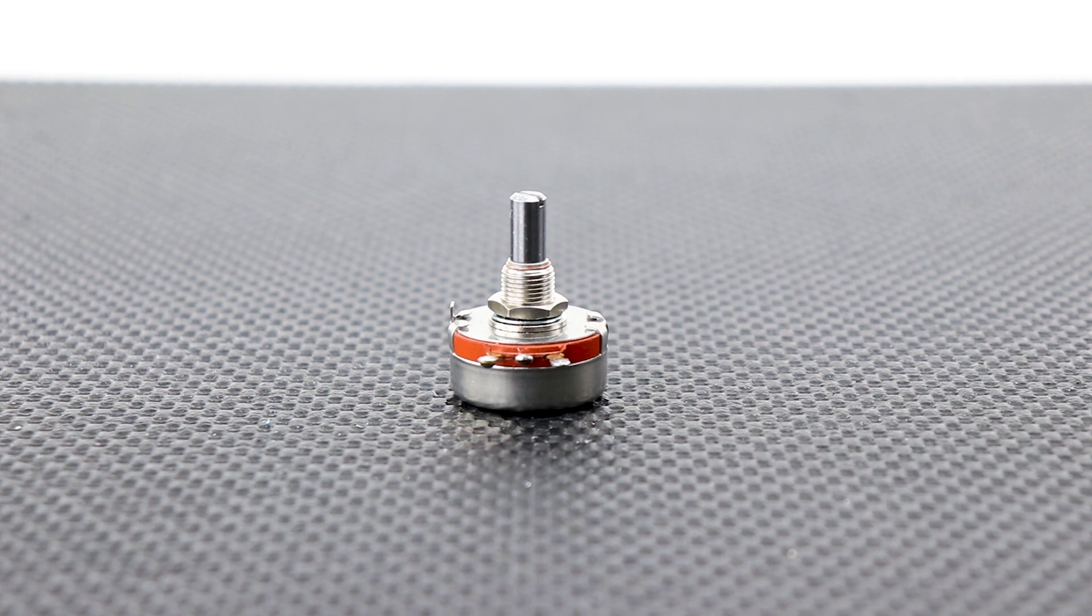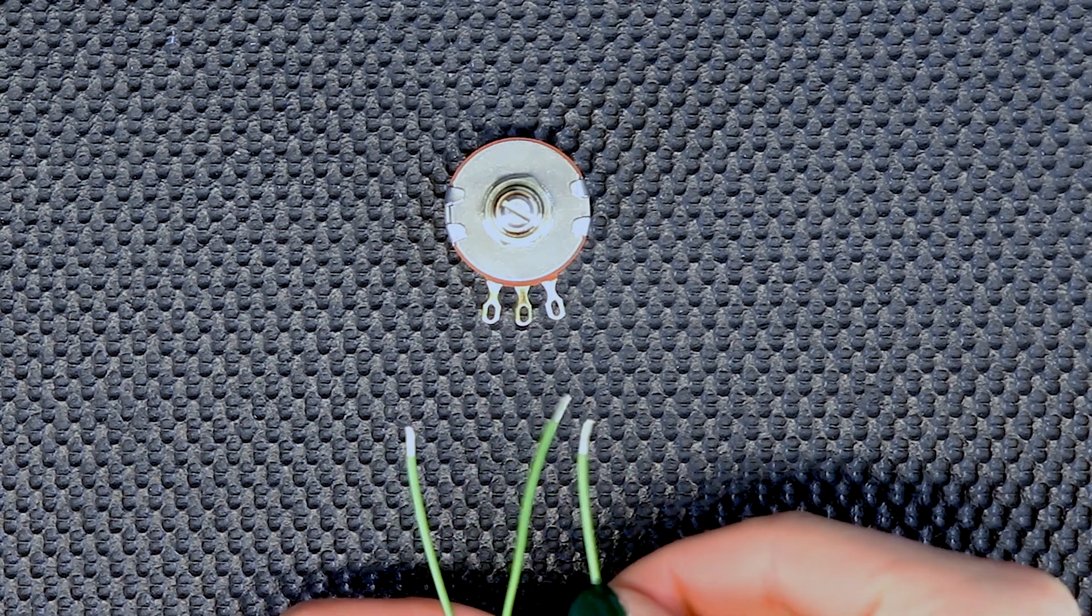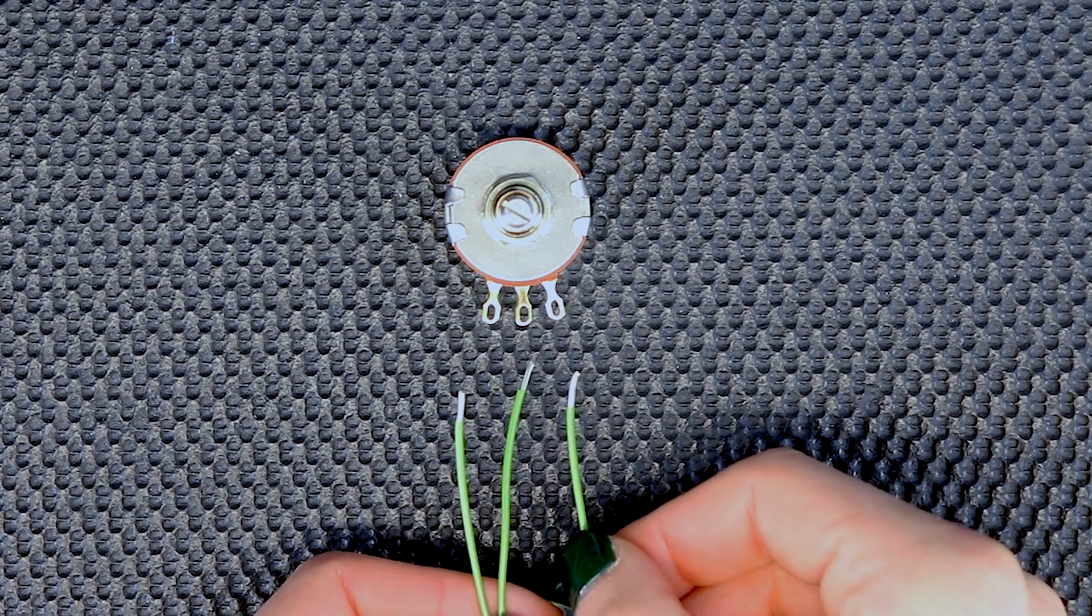In this position, you can easily identify the terminals from left to right as one, two, and three. To make things easier, you may wish to temporarily label them to keep track of which terminal is which while working.